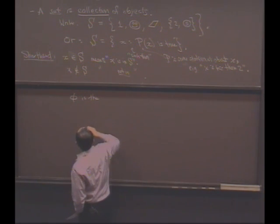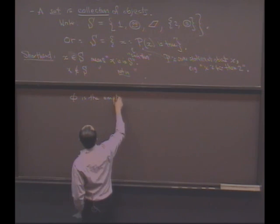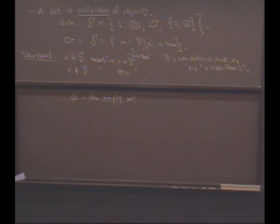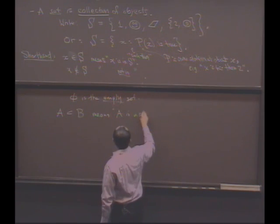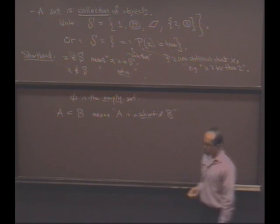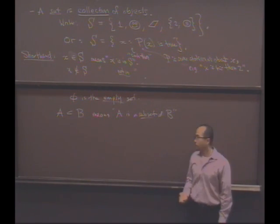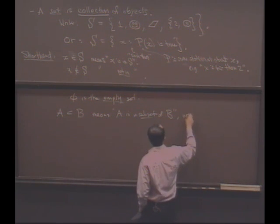Here's another notation, a shorthand we'll want to use. Sometimes I want to say that one set, one collection of things, contains another collection of things. So if I write A with a sideways symbol like this, it means A is a subset of B.